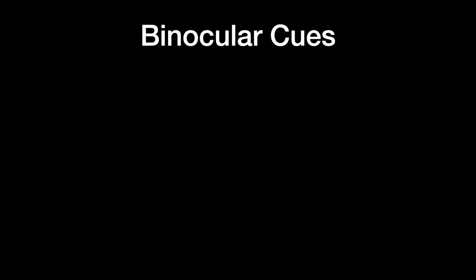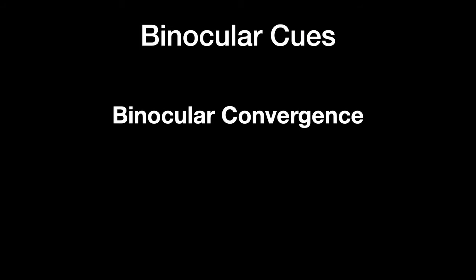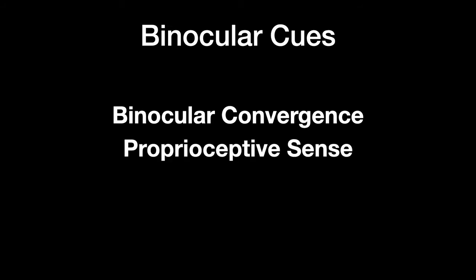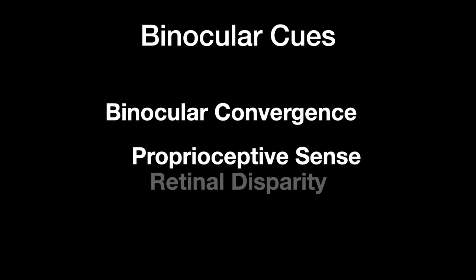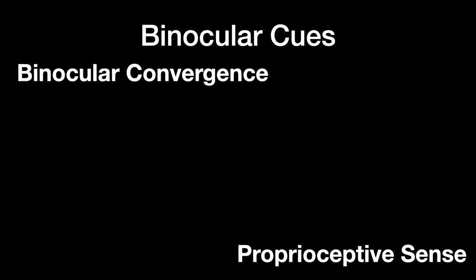Let's switch to the slides and take a look. There are a set of concepts to get through here, each playing a role in how we experience the world in a 3D way. The first is binocular convergence. The second is proprioceptive sense — these two go together and we'll discuss them together. And the final one is retinal disparity, which is the difference between the image portrayed on the left retina versus the right retina.